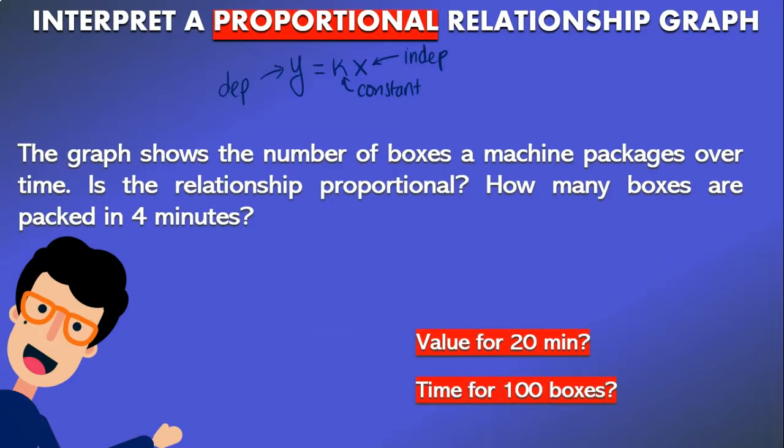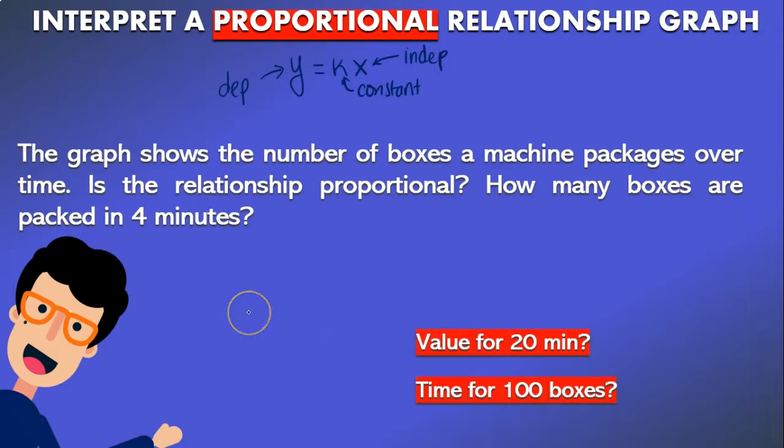Let's see the following problem. The graph shows the number of boxes a machine packages over time. Is the relationship proportional? How many boxes are packed in four minutes? And then we have two additional questions in red. What is the value of boxes for 20 minutes? And what is the time for 100 boxes?